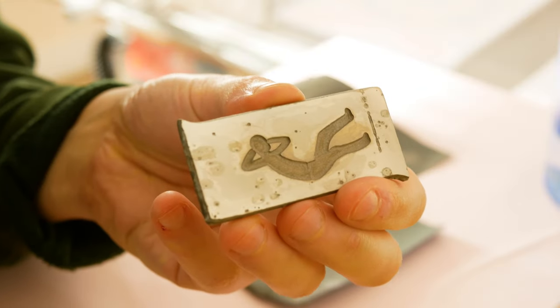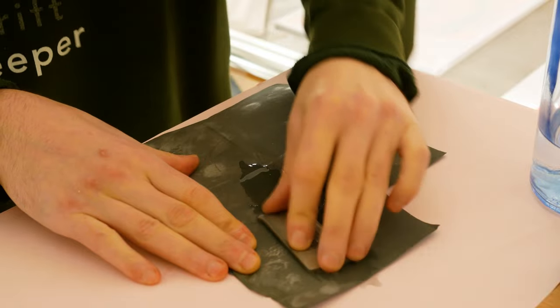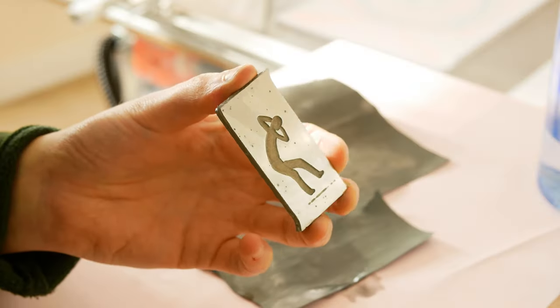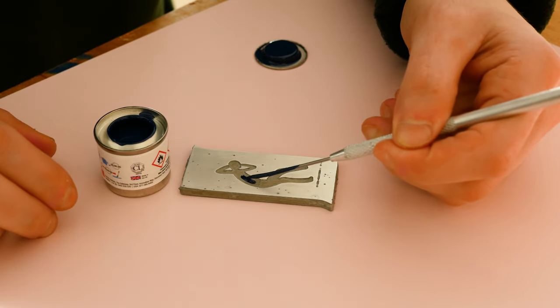A quick sanding with some 600 grit paper will clean it up. You can see some blemishes on the surface of my keychain. I think this is caused from too thin of a layer of etch resist. I think next time I will apply a second coating after it has dried.